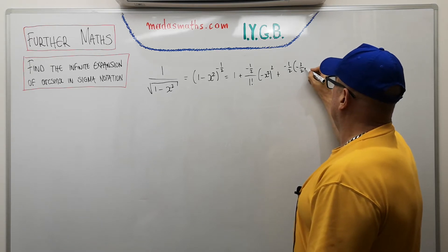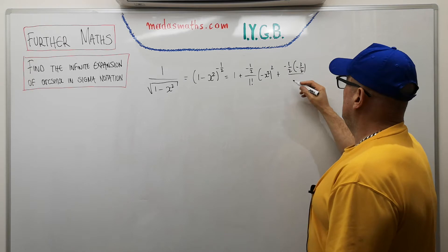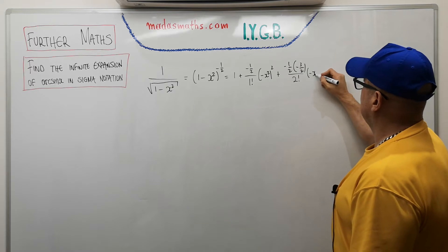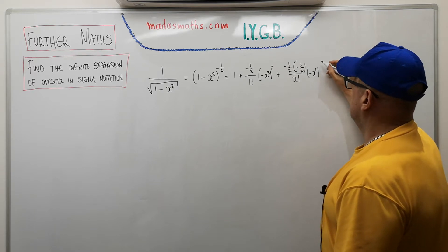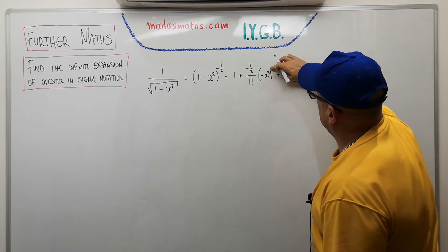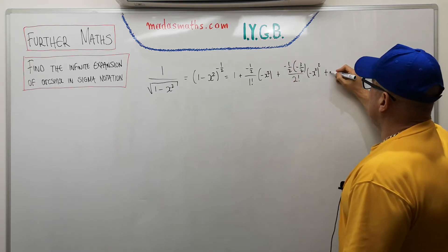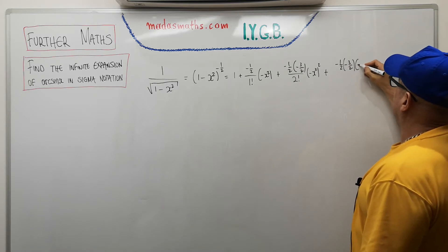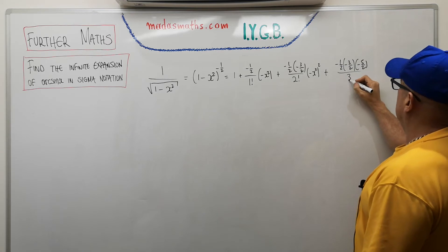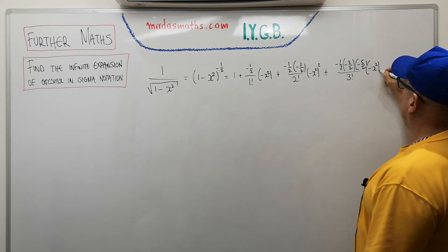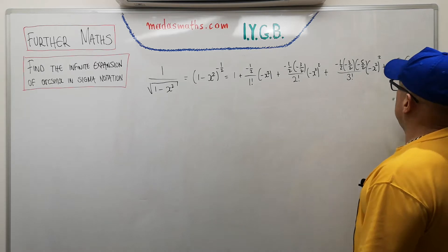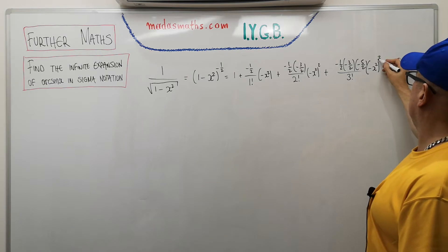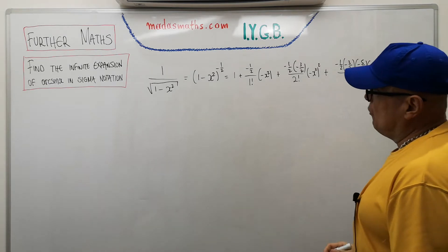1 minus x squared to the power of minus a half, and let's write the first few terms. So we're going to have 1 plus minus a half over 1 factorial minus x squared, or squared, and so on. So I'm writing a few terms. Maybe we'll go up to x cubed, or rather the x to the sixth, because this one is already squared inside the bracket. So one more term.